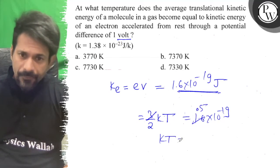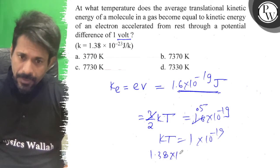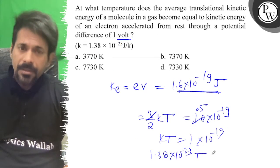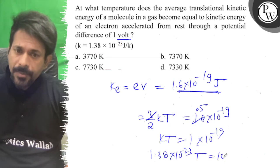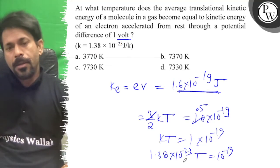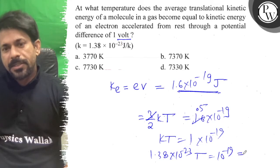So kT is equal to 1 into 10 to the minus 19. So T is equal to 10 to the minus 19 divided by k, which equals 10 to the minus 4 when we account for the 3/2 factor.